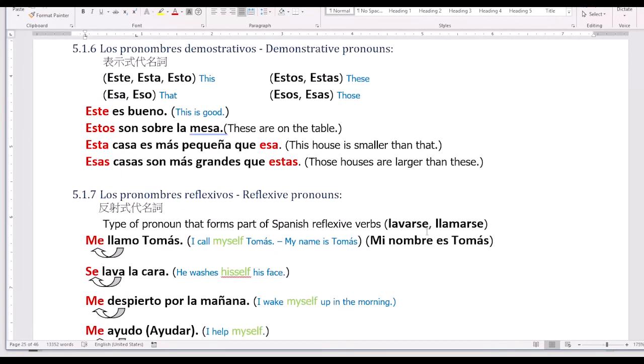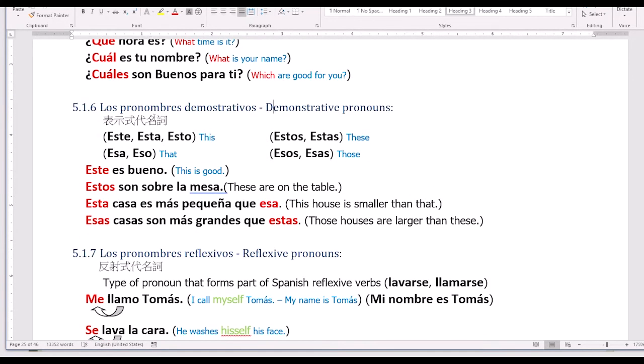Now we jump to another - demonstrative pronoun. We are going to show some things. For example: este, esta, esto - this; estos, estas - these; ese, esa - that; esos, esas - those.